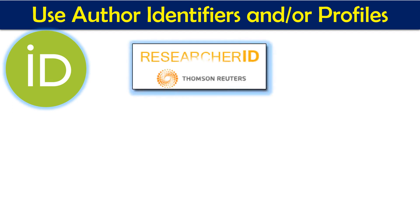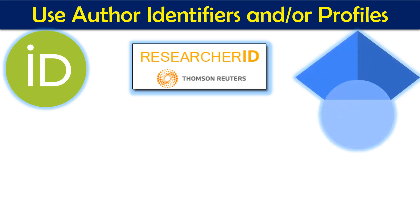The second identifier is Researcher ID. Researcher ID can be created on the Thomson Reuters website. It is Thomson Reuters' registry of unique author identifiers, limited to authors with work indexed in Web of Science. Researcher ID adds a dynamic citation matrix from Web of Science, and authors have to register for this ID. The third identifier is Google Scholar — you can log in with your Google account, which ensures all your works are grouped together and enables you to track citations of your work.